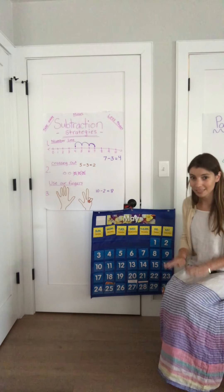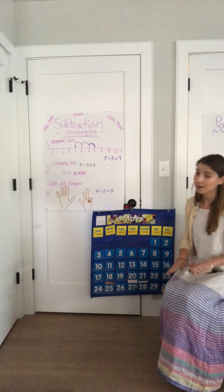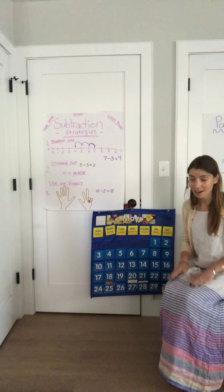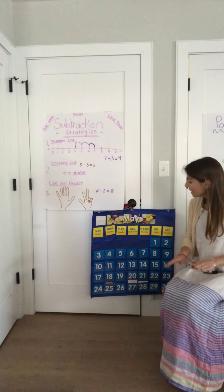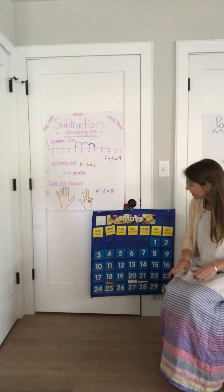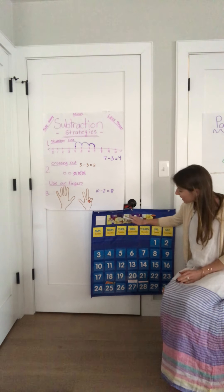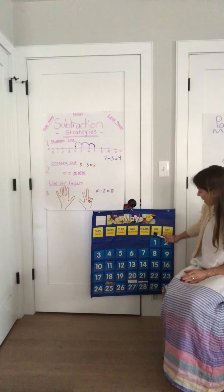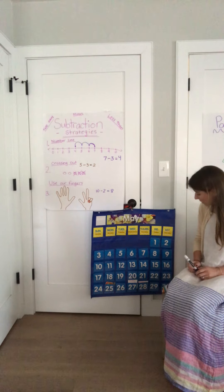Days of the week — ready? There are seven days, there are seven days, there are seven days in the week. Sunday, Monday, Tuesday, Wednesday, Thursday, Friday, Saturday. All right.